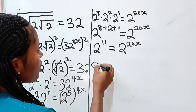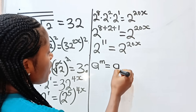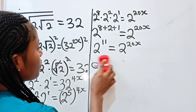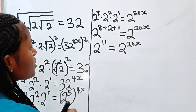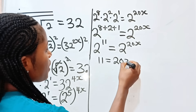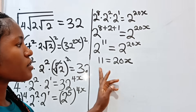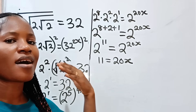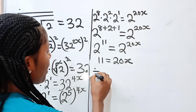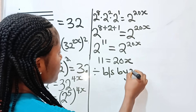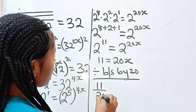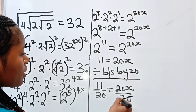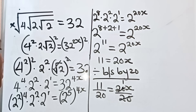Remember that if a to the power of m is equal to a to the power of n, then m is equal to n. So that means that 11 is equal to 20x. Now let us divide both sides of this equation by 20 to get our x. So dividing both sides by 20, we have 11 over 20 is equal to x. So x is equal to 11 over 20.